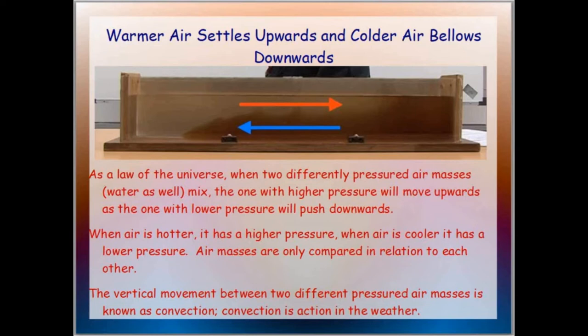What makes a warm front warm is the fact that it is moving into something that is colder — it's a temperature assigned to an air mass based in relation to its environment. The vertical movement between two differently pressured air masses is known as convection — convection is action and weather. You can see convection has occurred by clouds and by rain, and like a convection oven, it is just circulation, it is movement.